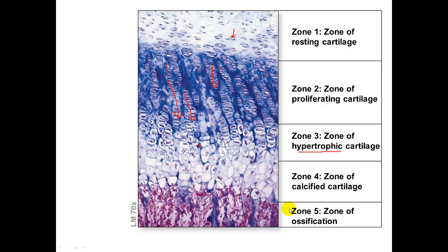In Zone 5, the walls break down between the lacunae in the columns and the spaces are invaded by capillaries and osteoprogenitor cells — cells that will give rise to osteoblasts or osteoclasts. If osteoblasts form here, they create new bone matrix that will be ossified. The epiphyseal plate maintains its thickness during childhood, then slows and eventually narrows until it disappears, stopping interstitial growth.